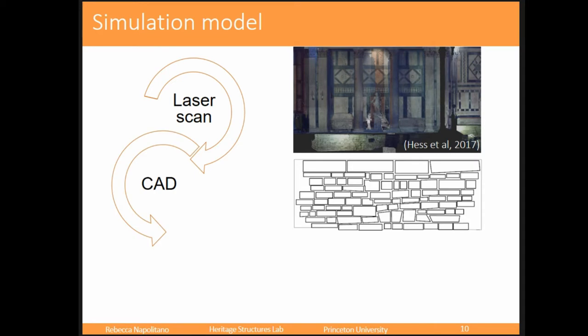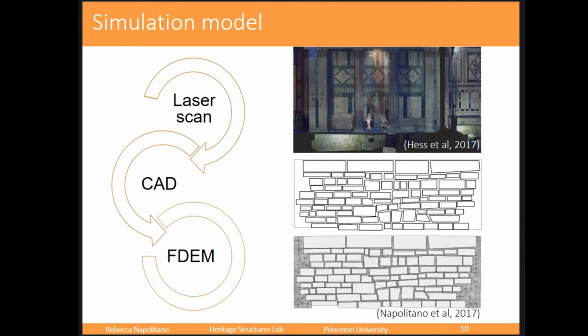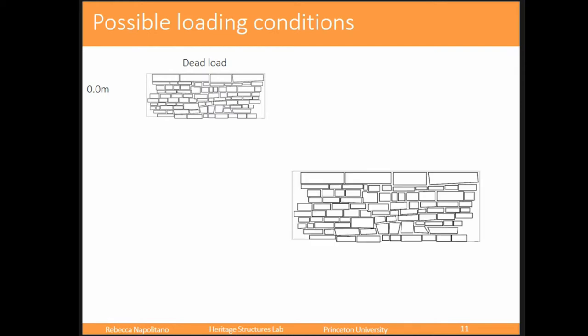Mike took the laser scan data and converted it into a 3D CAD model of the wall, modeling exactly where all of the stones were located. Then I used the methodology I presented at last year's CAA and converted that CAD model into something readable by a finite distinct element modeling program. We meshed the mortar sections, and each stone is a distinct block. The first load we considered was just the dead load of the building acting on this foundation wall.